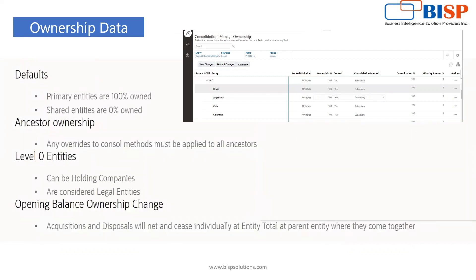First we'll discuss ownership data. The prerequisites are that we must have a holding company, and we have various subsidiaries but for all entities we have a common parent — a super parent or C-level entity. One of these entities should be a holding company. By default, primary entities are 100% owned, and shared entities should not exceed more than 100%.